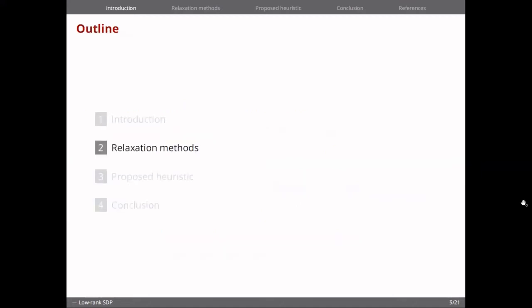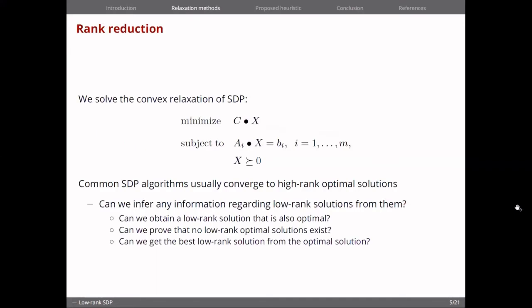And so let's see some relaxation methods that have existed in the literature. The first category we're going to look at is rank reduction. The idea here is to lift the rank constraint. So we have the classic SDP, which will usually converge to a high-rank optimal solution, even if a low-rank solution exists, with interior point algorithms, which are common.